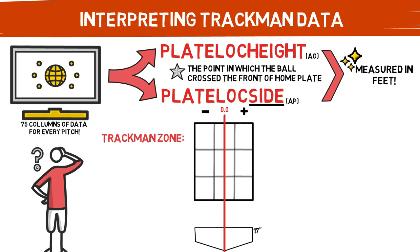Home plate is exactly 17 inches across. So in order to create a border around that area, the official TrackMan zone sits at negative 0.75 feet to the left of the midline and 0.75 feet to the right. That equates to 9 inches on each side or 18 inches across.